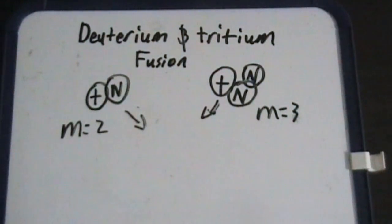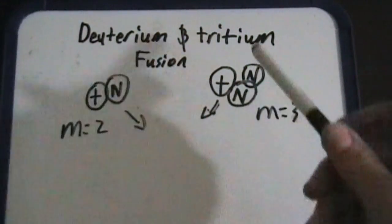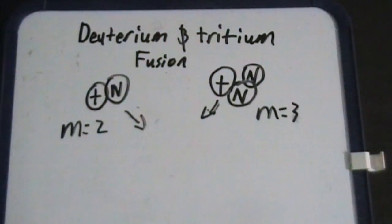So deuterium and tritium fusion. Deuterium and tritium are two isotopes of hydrogen. Tritium is made up of three subatomic particles, two neutrons, one proton. And deuterium is made up of two subatomic particles, one neutron and one proton.